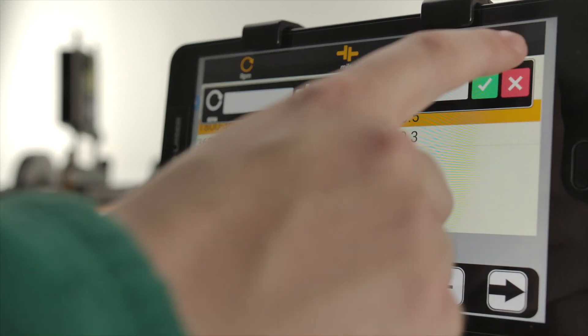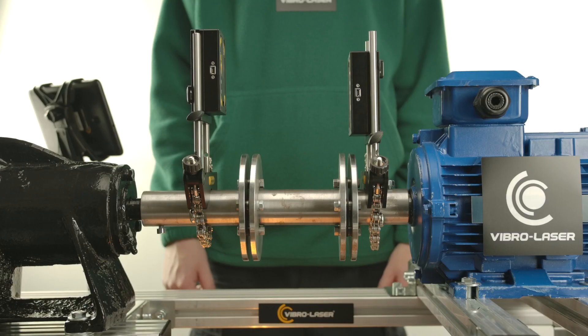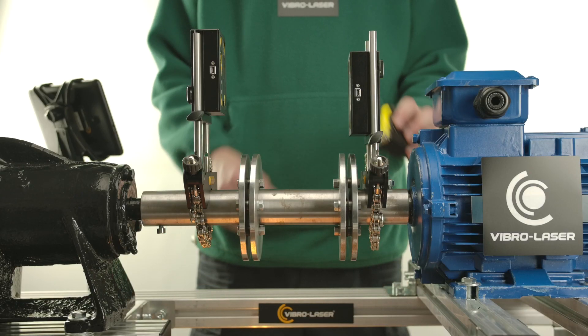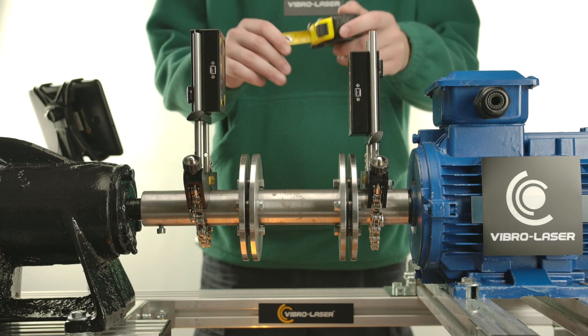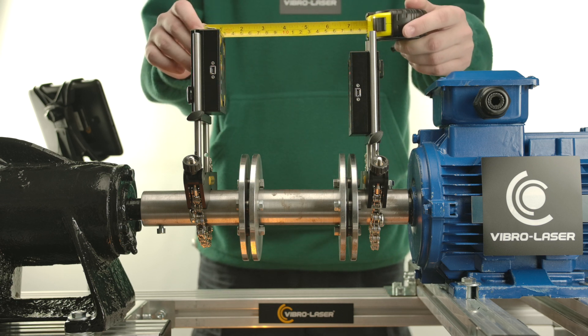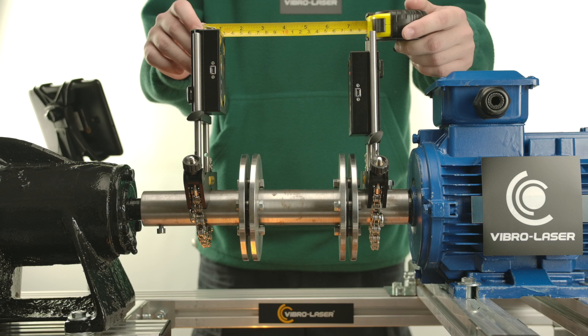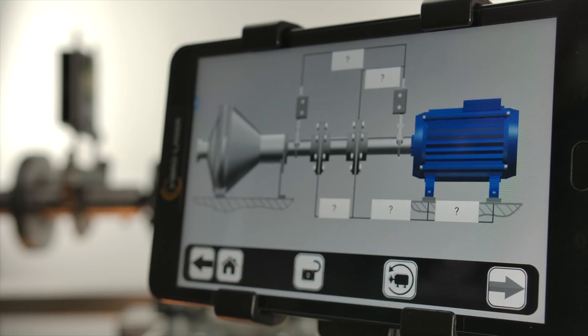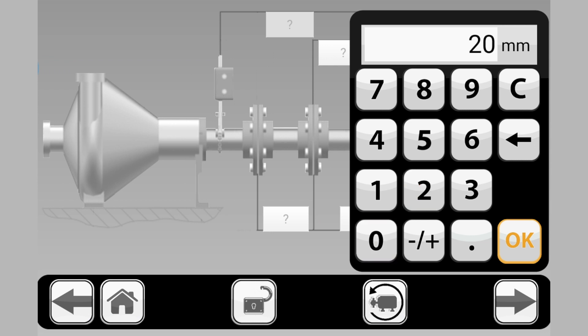Here is an example of entering the dimensions of a machine with a cardan shaft. For this procedure, you need to measure the distances as accurately as possible using a measuring tape. Use the distances shown on the screen, then fill in the associated values as displayed.